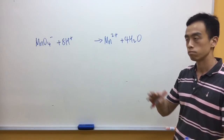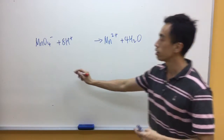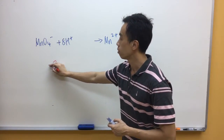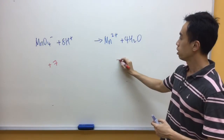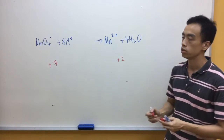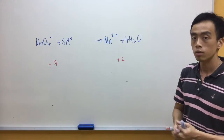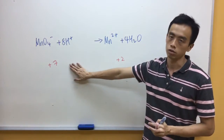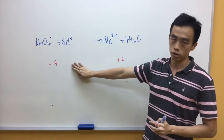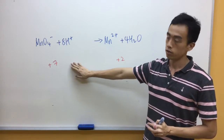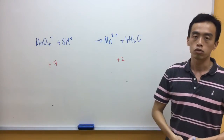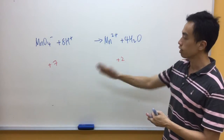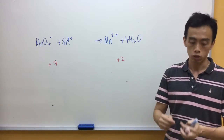All together I have 7 positive charges on the left-hand side. On the right-hand side I have a +2 charge for Mn, and water is neutral, so I have a +2 charge on the right-hand side. Because there are more positive charges on the left-hand side, I have to add electrons on the left-hand side — 5 electrons — so both sides of the equation will have a +2 charge.